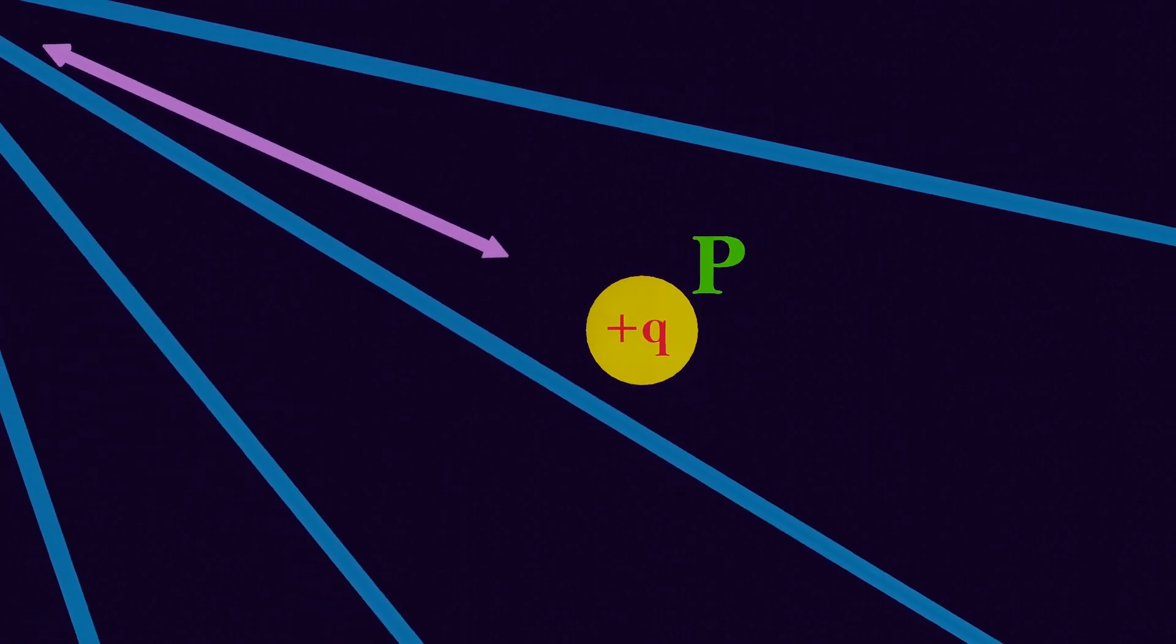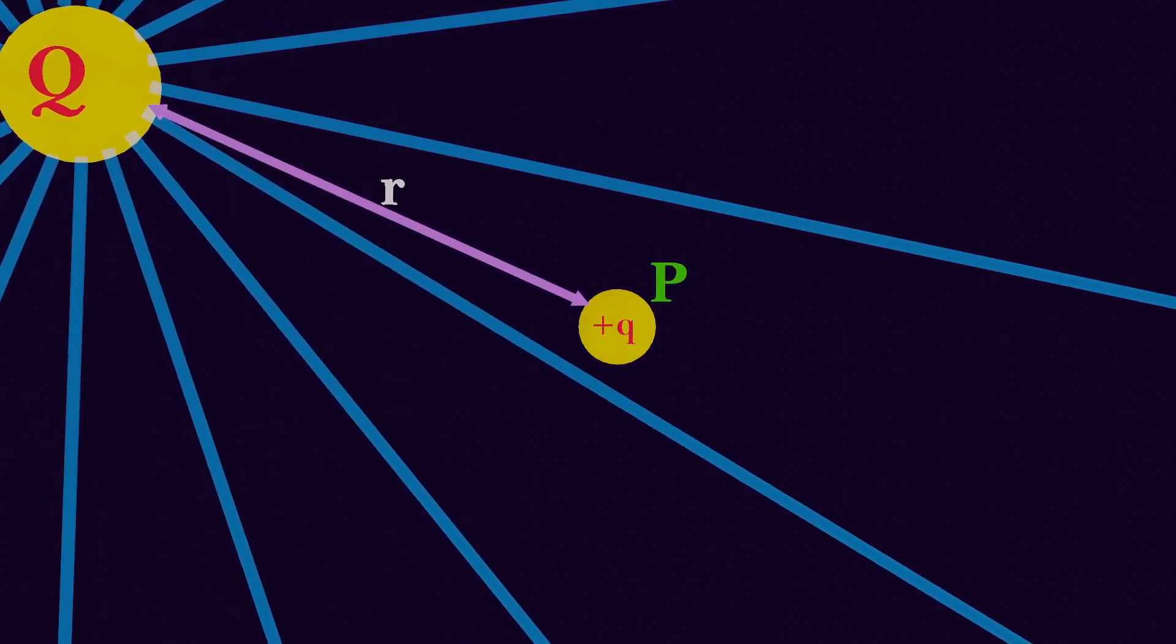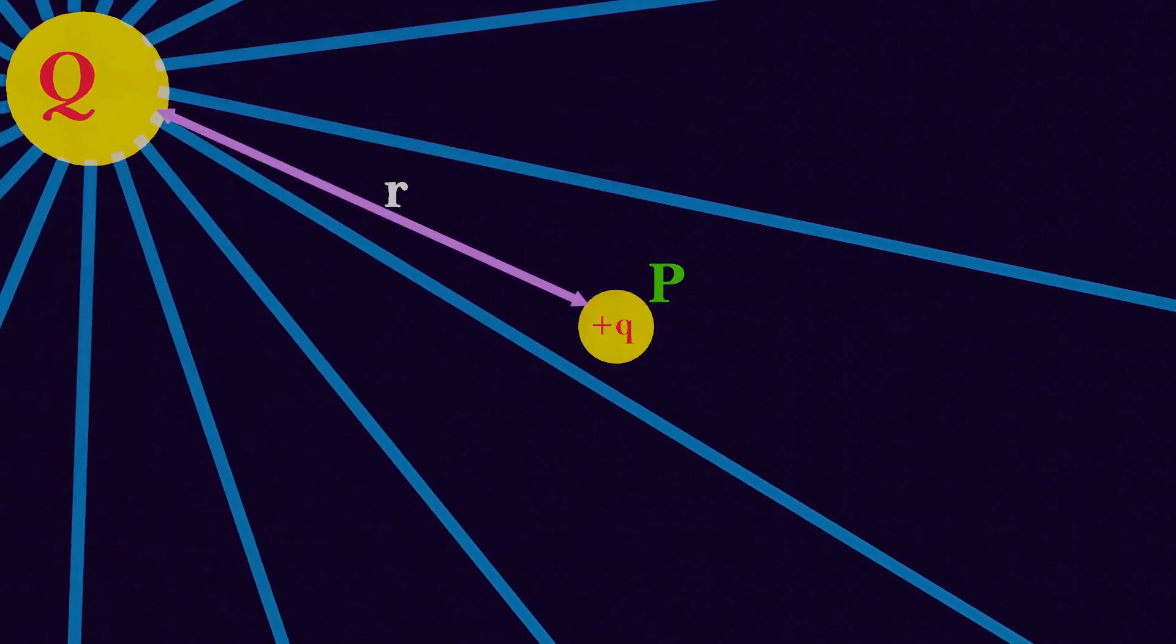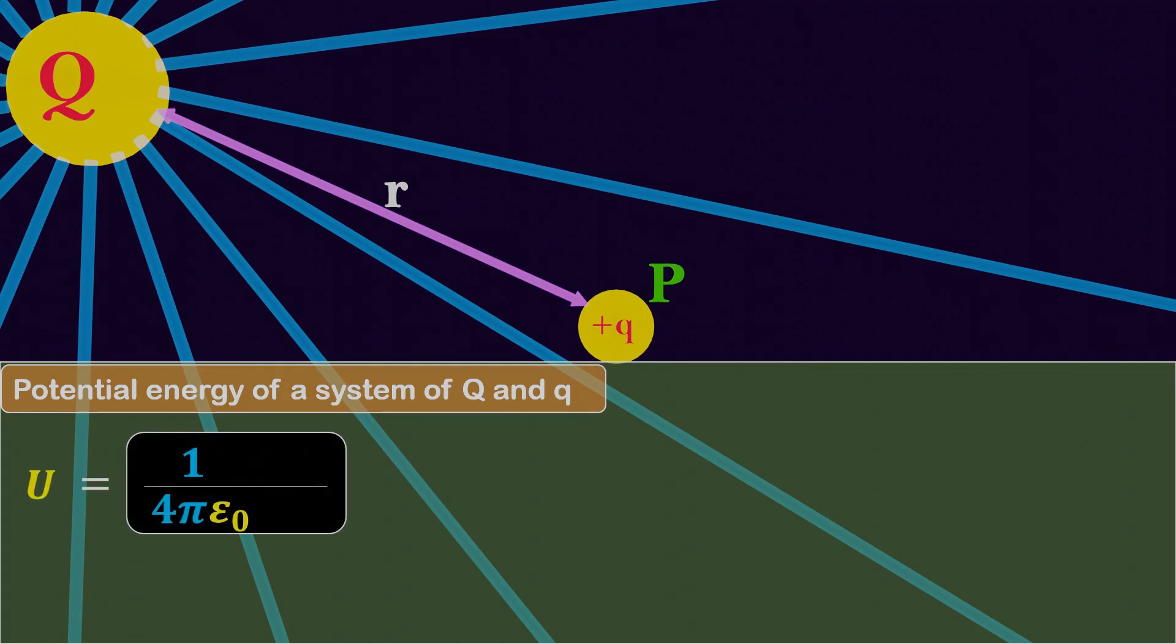Without a charge, there can be no electric field. This means that at some distance r from the charge q, there must be a source charge that is creating the electric field here. The potential energy of the system of the source charge and the charge will be expressed as U equals 1 upon 4 pi epsilon naught source charge Q into q divided by distance between the charge and the source charge, denoted as r.